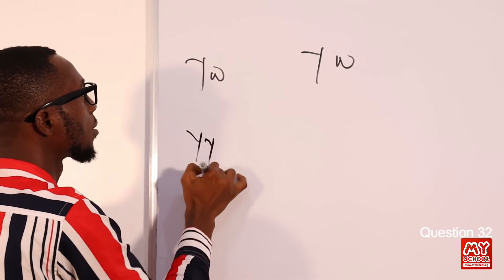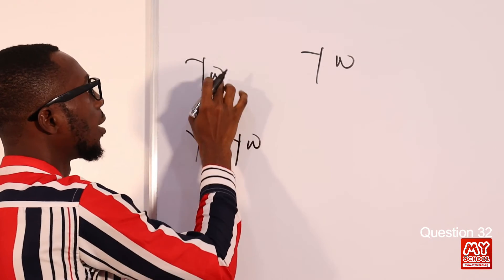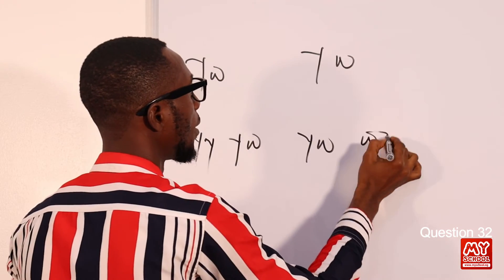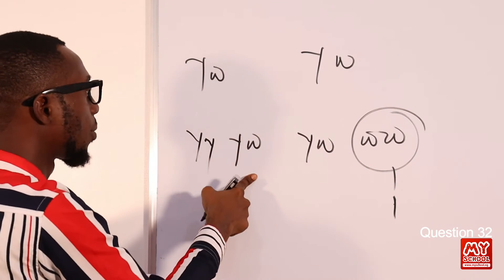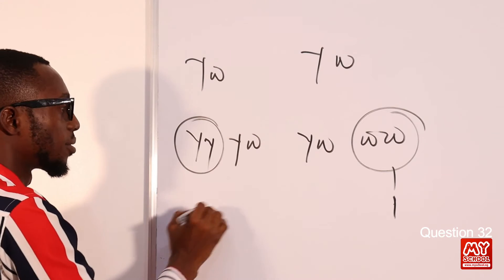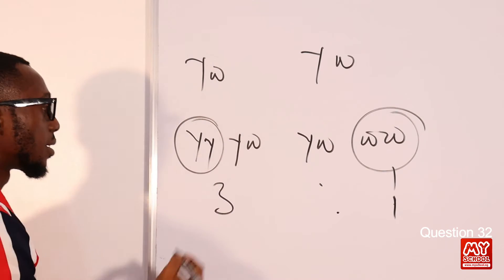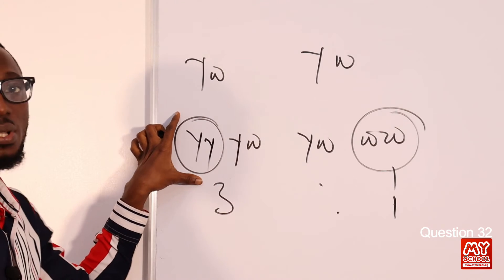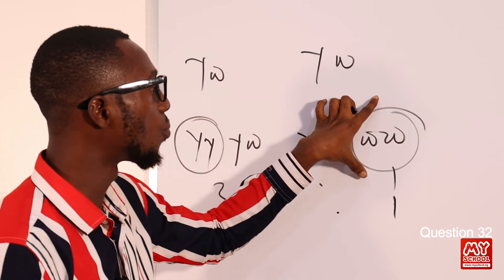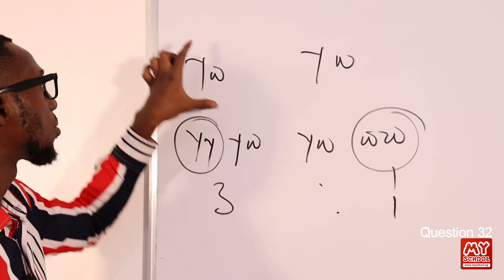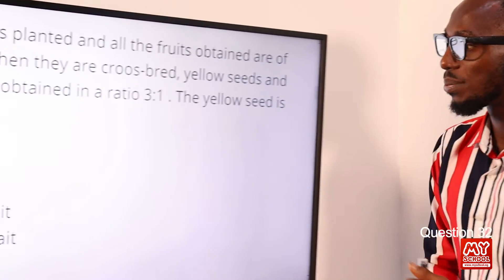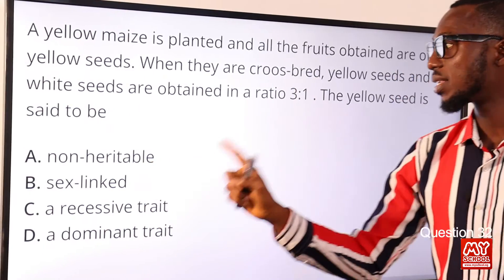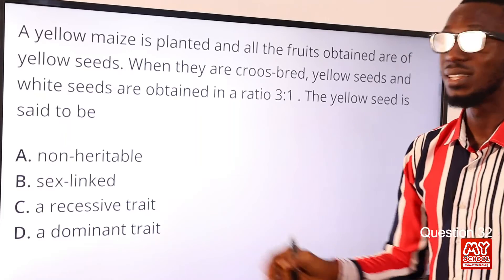When heterozygous yellow is crossed with heterozygous yellow, we get: homozygous yellow, heterozygous yellow, heterozygous yellow, and homozygous white — giving a 3:1 phenotypic ratio. The genotypic ratio is 1 homozygous yellow, 2 heterozygous yellow, and 1 homozygous white. A 3:1 ratio tells us that yellow is dominant and white is recessive. Option D is correct: the yellow seed is said to be a dominant trait.